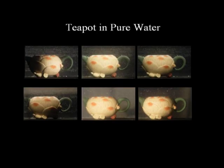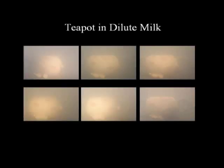Here we show images of a teapot seen through pure water under different lighting directions. These images are shown for illustration purposes only. Now we show the same teapot seen through dilute milk. Notice the strong effects of scattering leading to significant change in appearance.